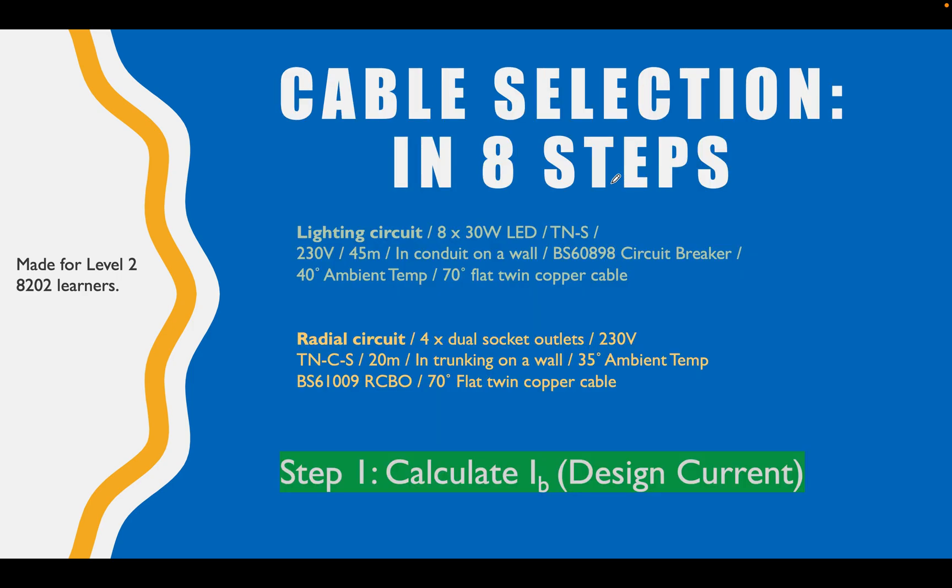Let's look at the screen for step one. These are the two circuits we're going to take through this process: a lighting circuit and a radial circuit. The lighting circuit is feeding 8x30 watt LEDs, and a radial circuit which is feeding four dual socket outlets. Let's have a quick look at these breakdowns - we're going to carry this information through and add to it as we go. The lighting circuit has 8x30W LEDs, TN-S system, 230 volt single phase installation. We've got the length, installation method, circuit breaker, ambient temperature, type of cable, and the same for the radial circuit.